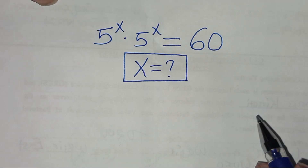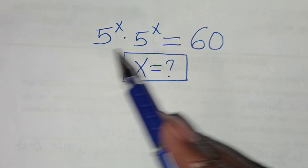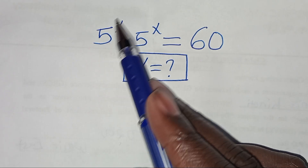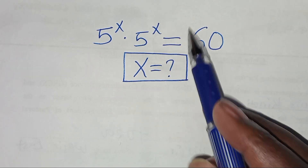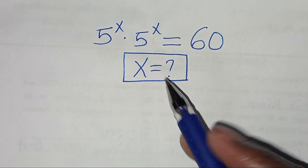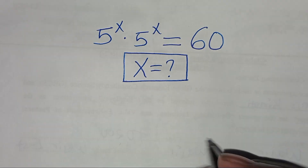Hello everyone, you are welcome to solve this nice exponential equation, which is 5 to the power x times 5 to the power x. This is equal to 60. So what is the value of x?